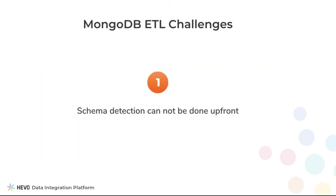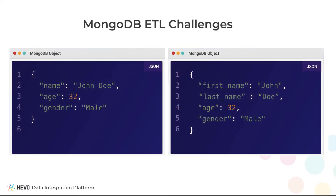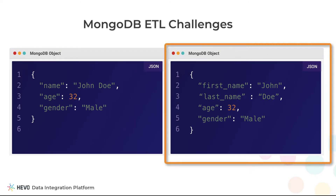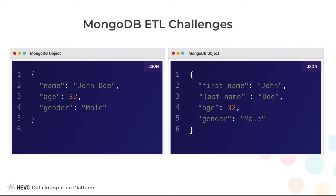Unlike a relational database, a MongoDB collection doesn't have a predefined schema. Hence, it is impossible to look at a collection and create a compatible table in Redshift upfront. For example, one document on users can have just a single name field, whereas the next document can have both first name and last name as fields. This makes it extremely hard to define a schema on Mongo, in turn making the ETL engineer's life really hard.